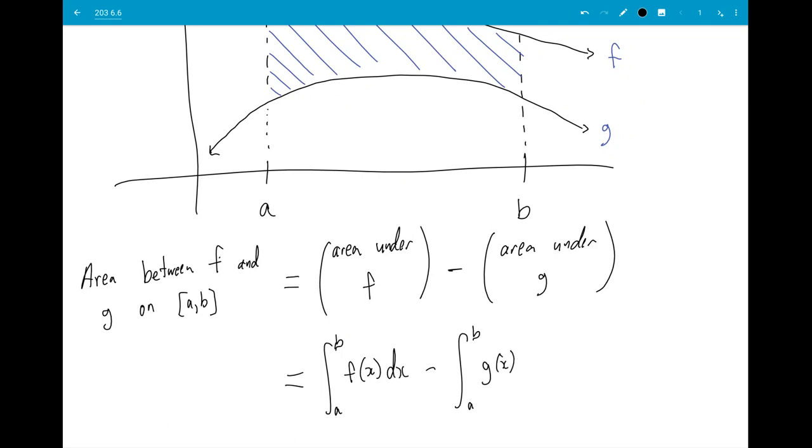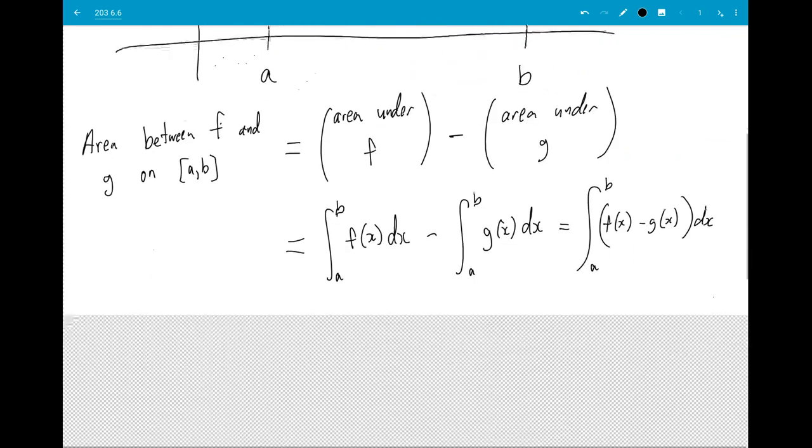It's the integral from a to b of f(x) minus the integral from a to b of g(x), which is equal to the integral from a to b of f(x) minus g(x) dx. Pause and copy that down. Scrolling down.